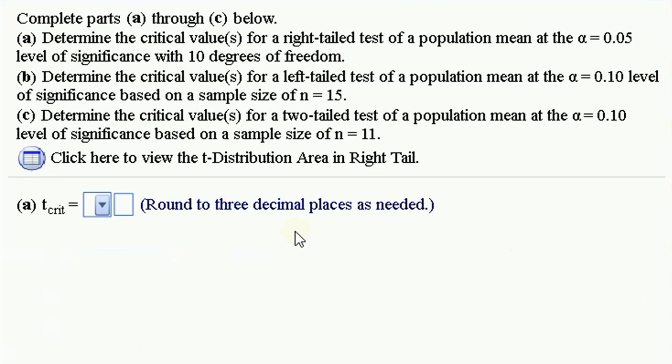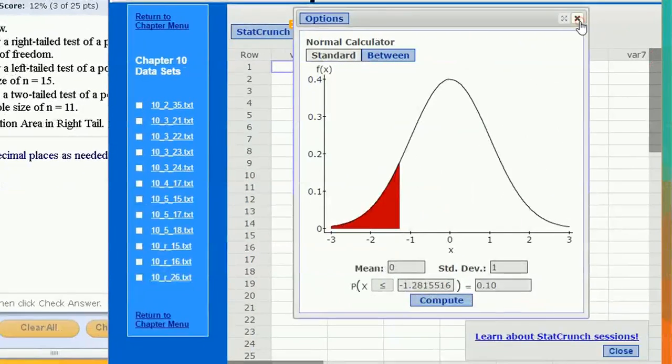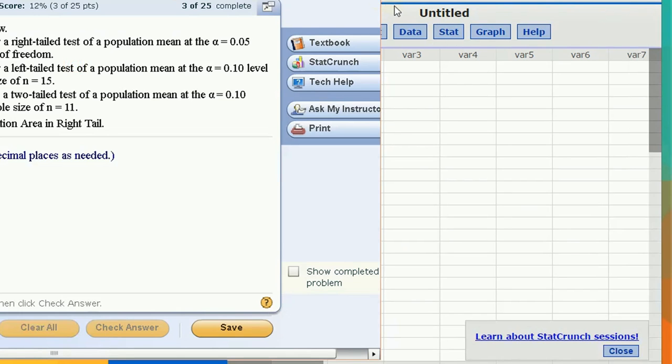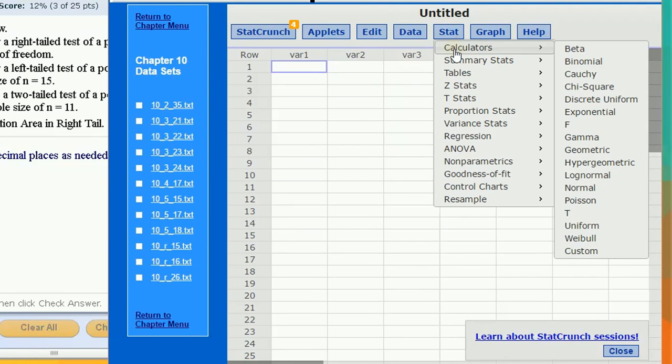So let's see. We want to find some critical values for doing a t-test. Going back to StatCrunch for the t-distribution, I'm going to look up the t-calculator under Calculators, the t-distribution.